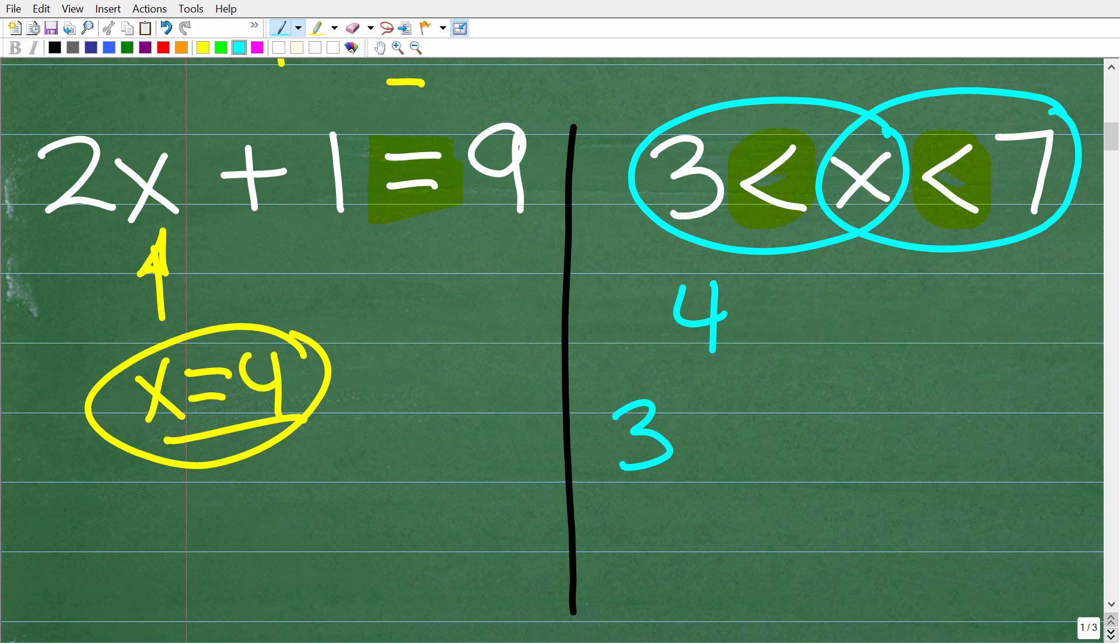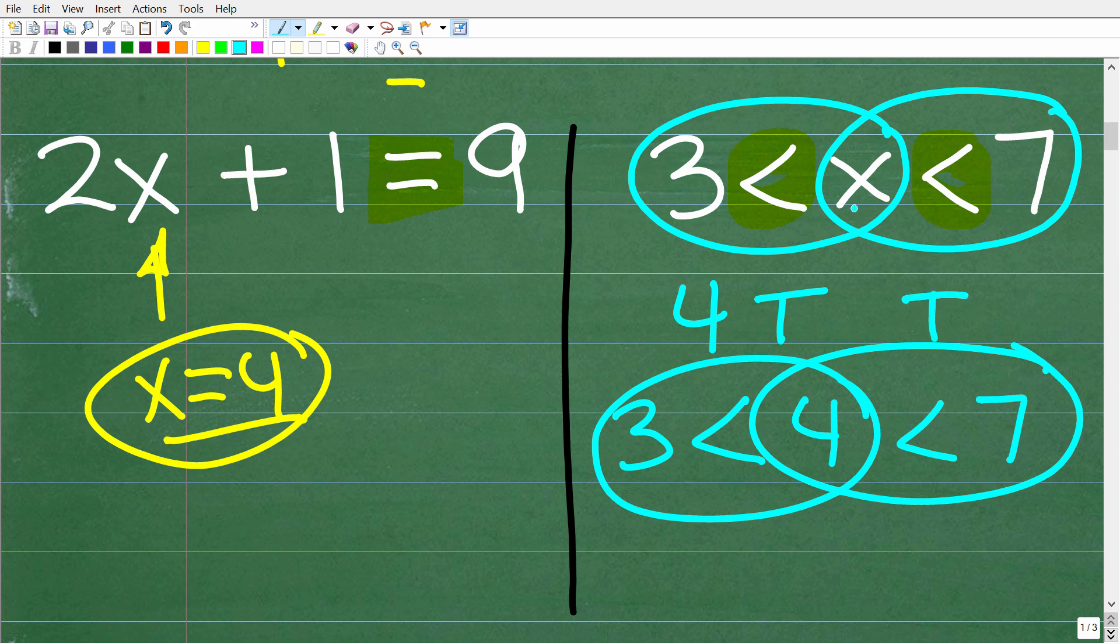So is, let me write this out this way. Okay, so we have 4 right here, and we have our 7 right here. So is 4 greater than 3? Yes, that is true. And at the same time, is 4 less than 7? Yes, that is true. So 4 is a solution.